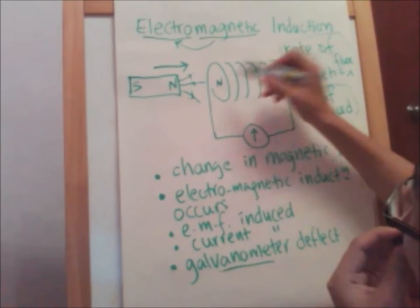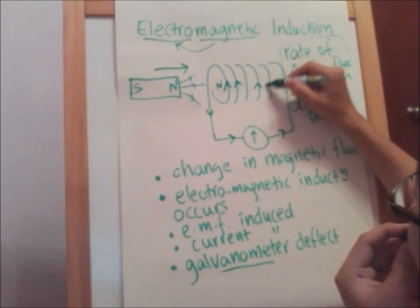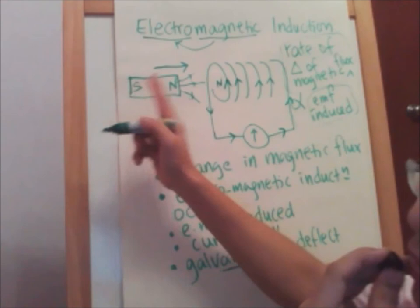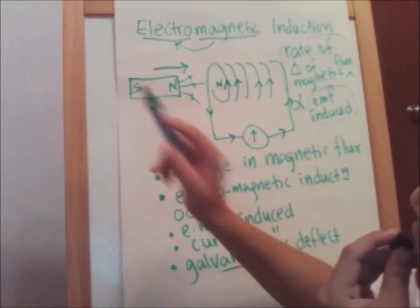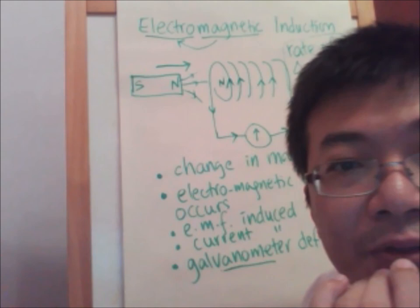So the current flows in that direction — that is the induced current. If you pull out the north pole, the coil tries to oppose by inducing a south pole, so the current reverses and the galvanometer deflects in the opposite direction. Thank you very much, I hope this is helpful for those doing O-level revision for pure physics. Have a nice day!